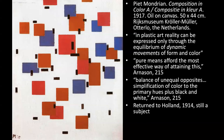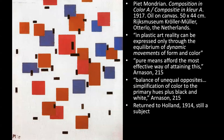'In plastic art, reality can be expressed only through the equilibrium of dynamic movements of form and color.' So like music, he used dynamism — naming works 'Composition and Color A,' just like you would name a musical movement. Like Seurat, Mondrian was really interested in scientific color theory. Through his research, he found that some colors seem to be universal — studies with children and people around the world found that colors like red, black, blue, and yellow spoke to people in a seemingly universal way.